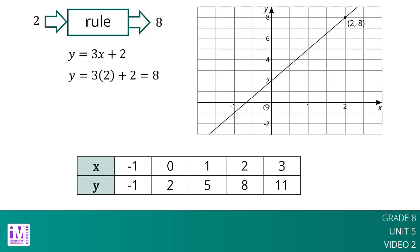A table representing this function shows the input-output pairs directly, although only for select inputs. As before with the equation and graph, the table shows that if the input is 2, the output is 8.